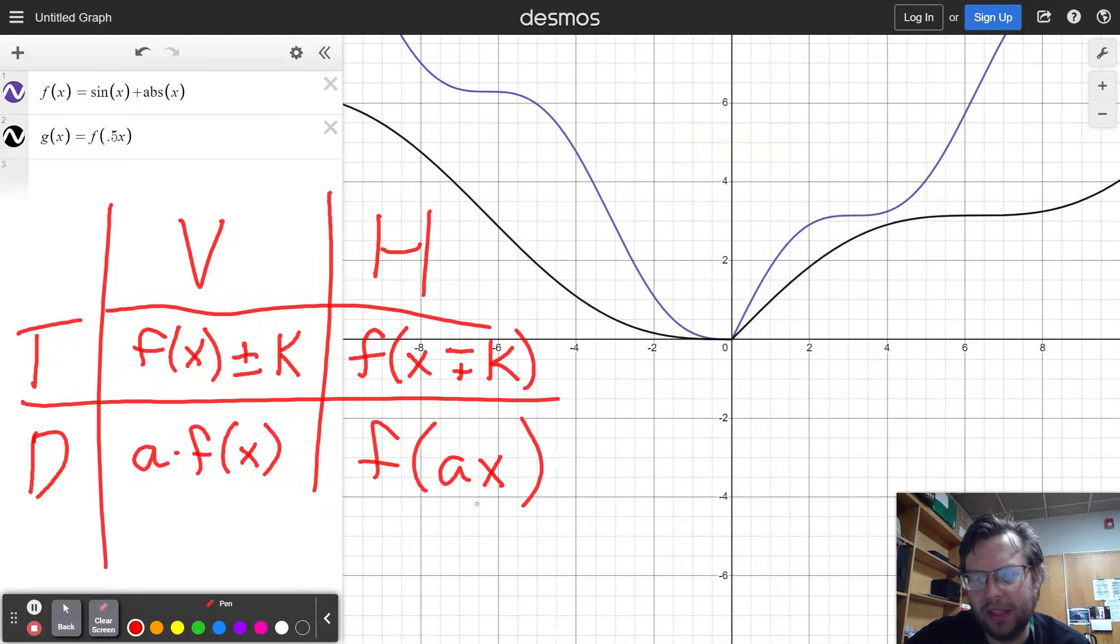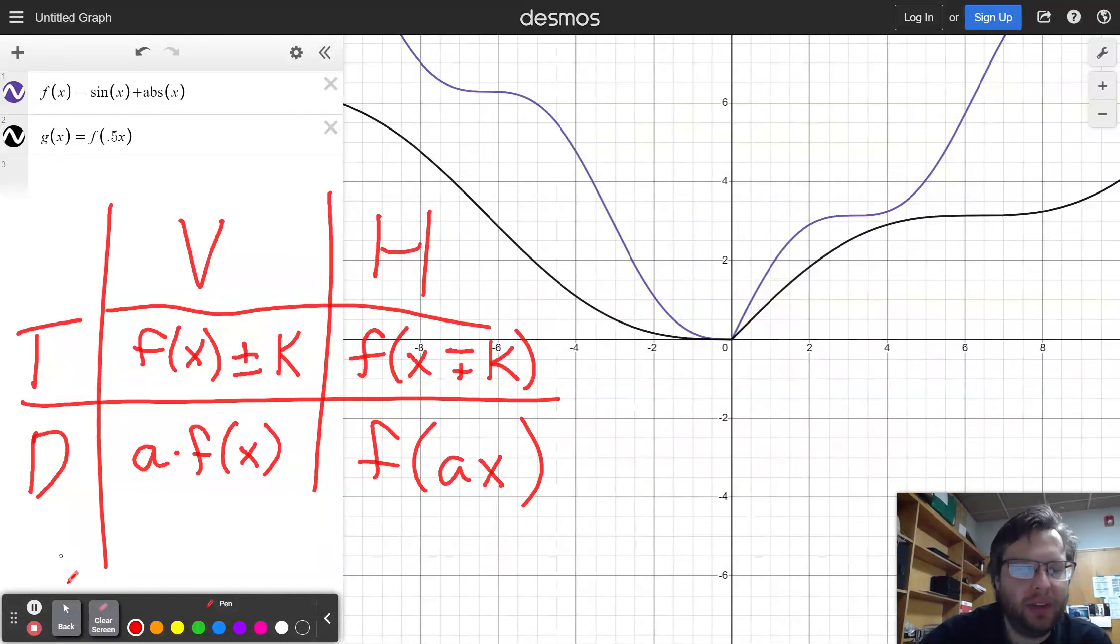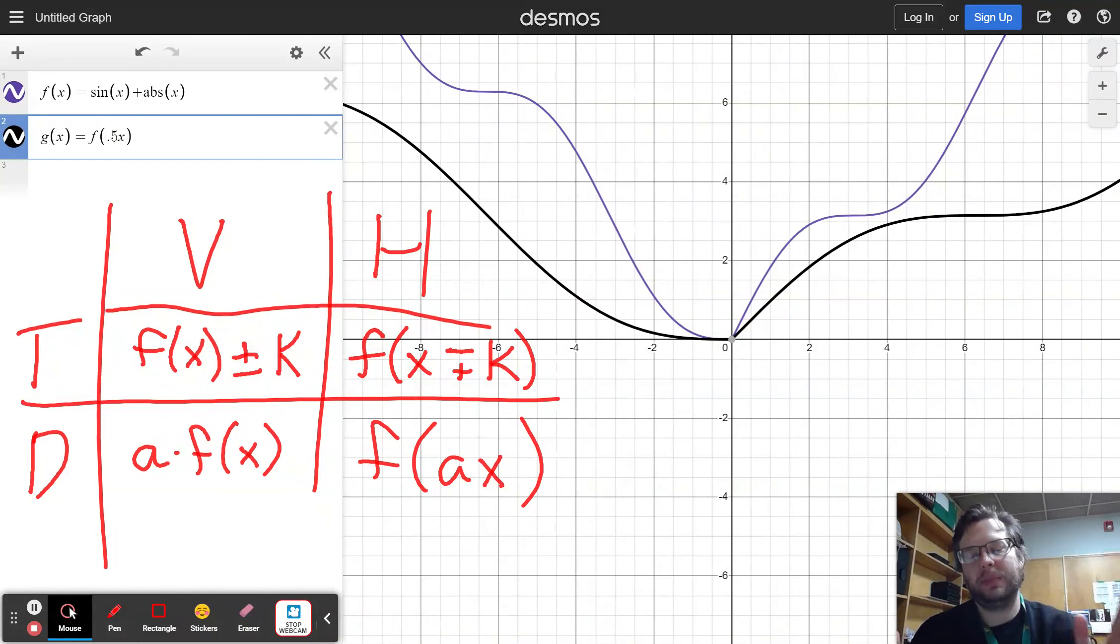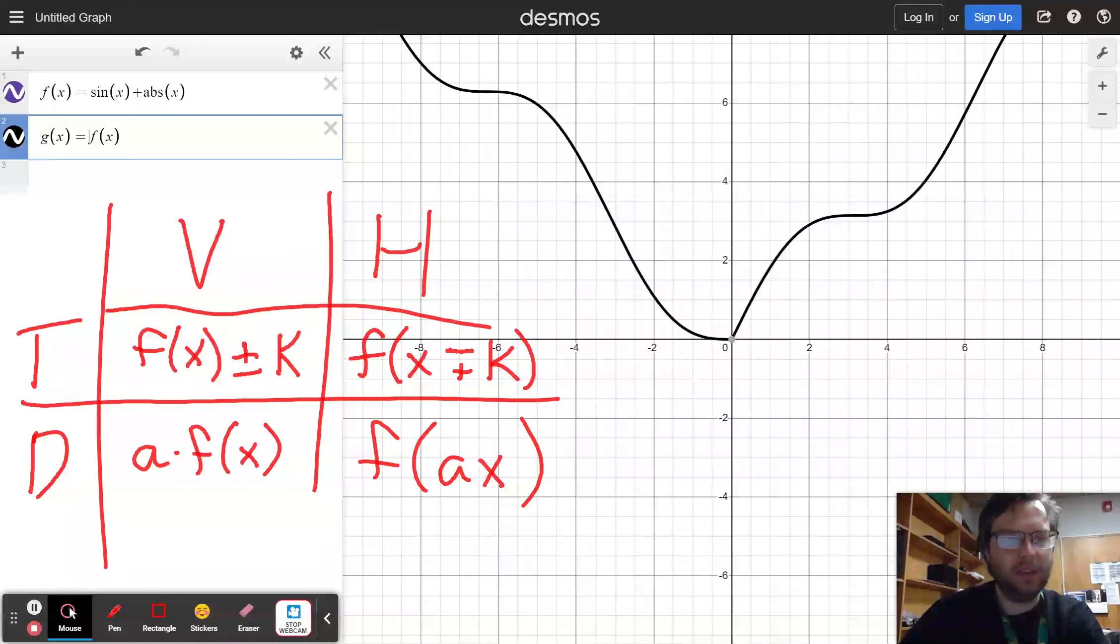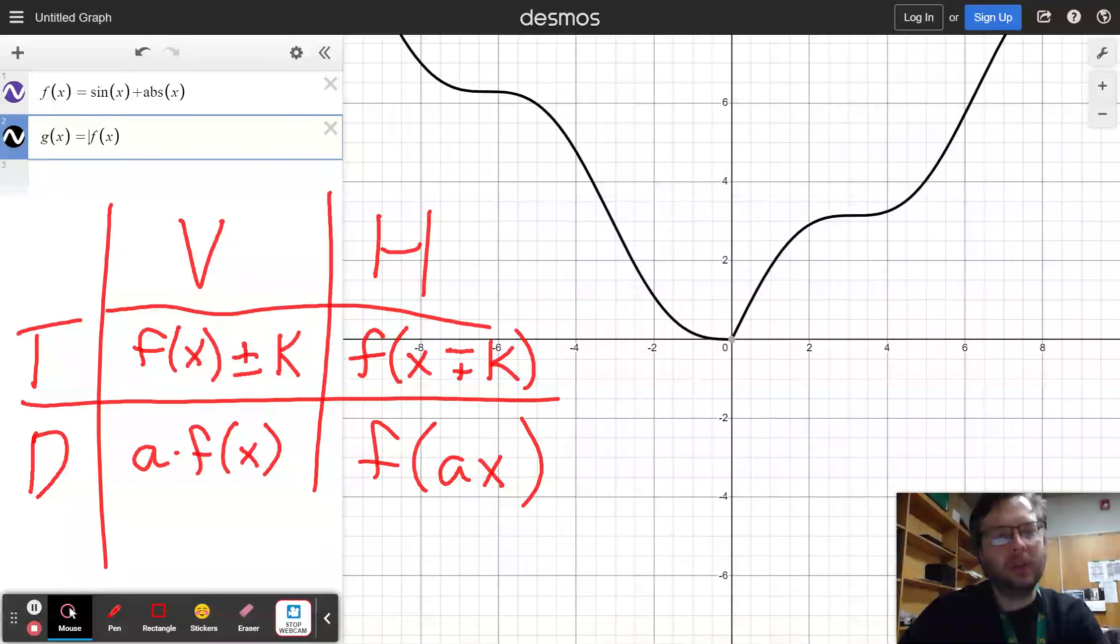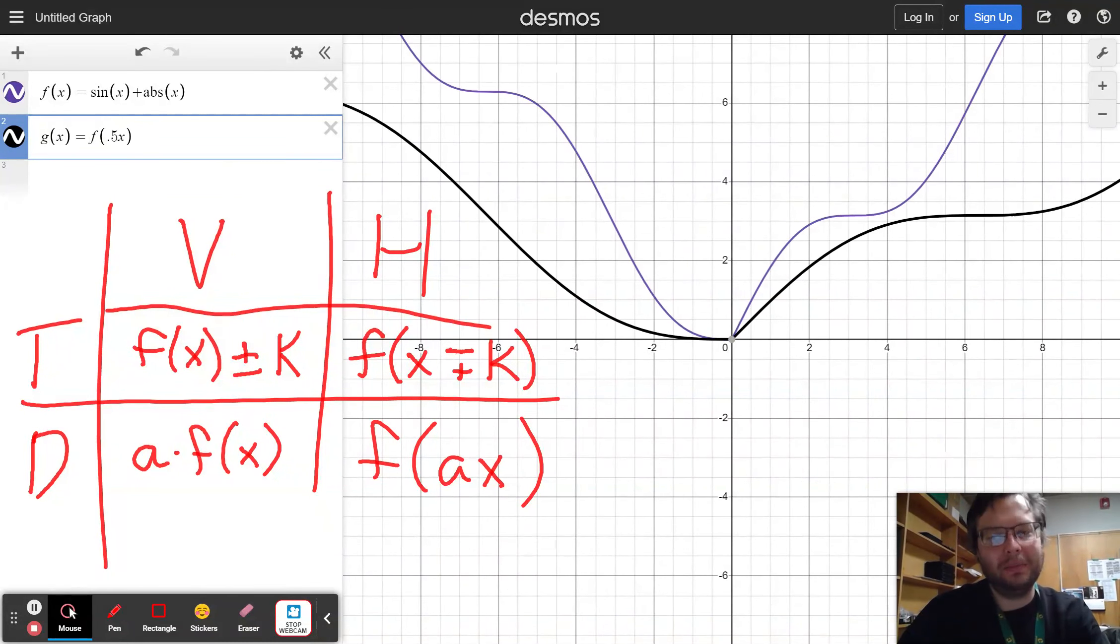And again, there is sort of a backwards thing that's happening with the horizontal movement where 0.5 doesn't make it narrower. 0.5 makes it wider. You might have expected narrower because when I do 0.5 on the outside, it makes it shorter like that. 0.5 on the outside makes it shorter. 0.5 on the inside makes it wider.